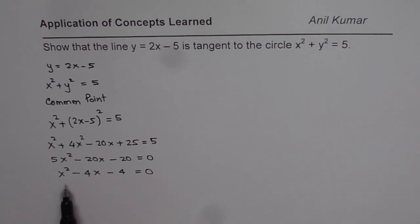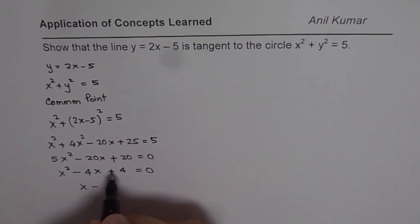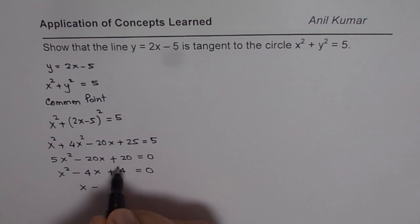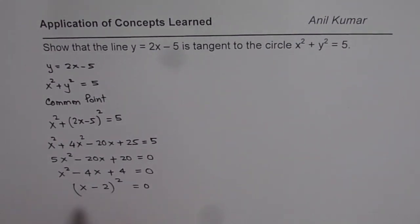And now we can find the point where it is tangent. So you can solve this quadratic equation, which you can also factor and say x minus 2. So 2 square is, I am sorry, this is positive 20, plus 25 minus 5 is positive 20. So x minus 2 whole square is equal to 0, and what we get here is x equals 2.